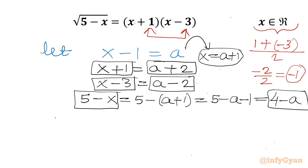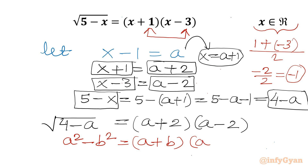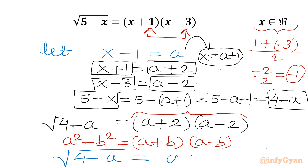Now let us write the equation: square root (4 minus a) equals (a plus 2) times (a minus 2). Now the difference of two squares identity applies: (a plus b)(a minus b) equals a squared minus b squared. Applying this to the right-hand side, we get square root (4 minus a) equals a squared minus 2 squared.